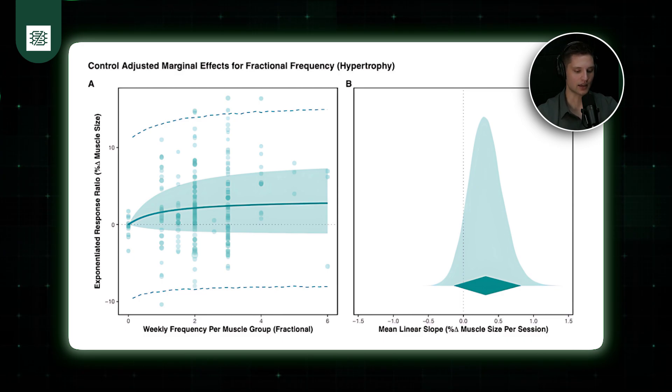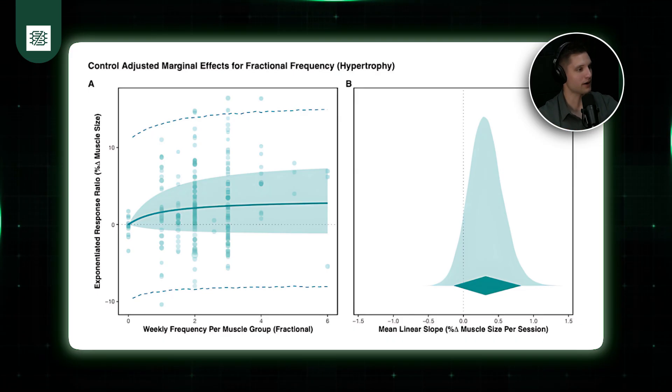So therefore, our results indicate that you can just think of it as the general effect of frequency from our data set. That effect is maybe slightly positive on average, but it's also very much compatible with negligible effects.